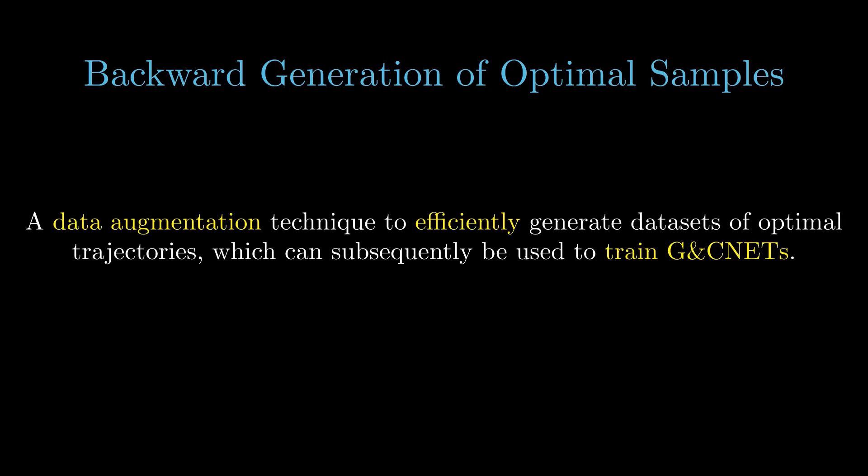This method allows to generate large datasets of optimal trajectories very quickly. These datasets can subsequently be used to learn the optimal control policy, as is the case for Guidance and Control Networks, or even the value function of the optimal control problem.